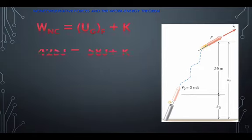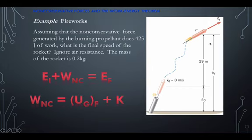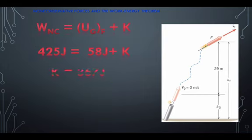So the first thing we should do is figure out how much gravitational potential energy it has here at the end. We do that by taking 0.2, which is the mass, times gravity, which is 10, times the height. So we just have 2 times the height, 58 joules.